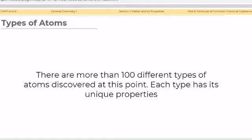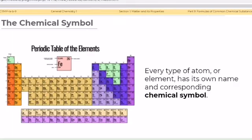There are more than 100 different types of atoms discovered at this point. Each type has its unique properties. Every type of atom or element has its own name and corresponding chemical symbol, and you can see that in the periodic table of the elements.